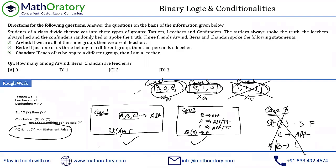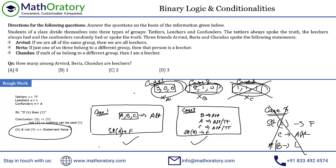Question 2 asks: how many among Arvind, Beria, and Chandan are leechers? Whichever case you pick, there are no liars among A, B, C. So the number of leechers among them is definitely zero.